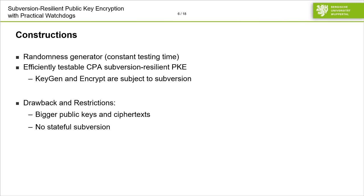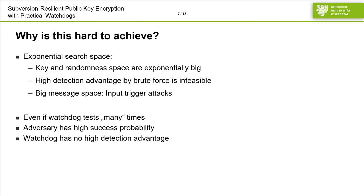So before we dive into the details, I want to give you a rough impression of why this is hard to achieve. The main problem with limited-time watchdogs are exponentially big search spaces. The key and random space of, for instance, a public key encryption scheme must be exponentially big, because otherwise an adversary could simply brute-force for the key. Thus, a high detection advantage by simply testing many or enough keys is just infeasible. Additionally, a big message space might be a problem, because there is this set of input triggers where an implementation only deviates from the specification for some single message chosen by the adversary. Thus, even if the watchdog would test many times, the adversary would still have a high success probability while the watchdog would not have a high detection advantage. All this holds if the watchdog has just black-box access to the primitive.